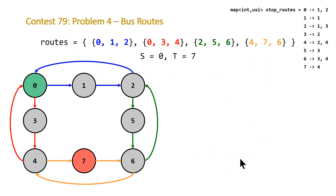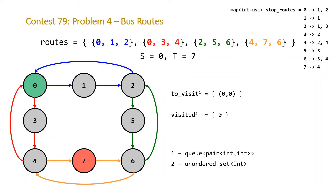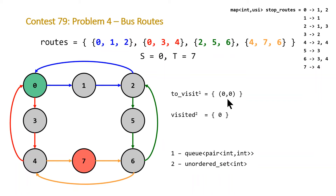We're going to use that to navigate our graph. We also need a queue representing our stops to process — a first-in first-out data structure — and an unordered set to keep track of stops we've already visited. We push into the queue our starting stop, which is stop 0. The first value in the pair is the stop number, and the second value is the number of routes or buses we've been on, initialized to 0.